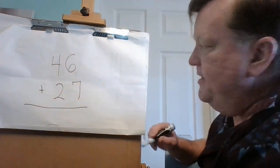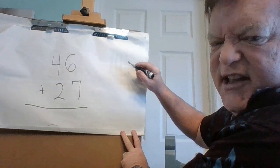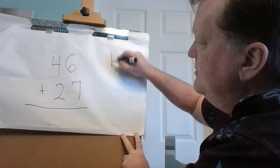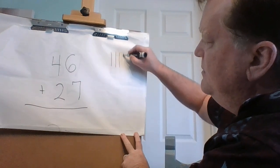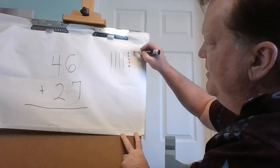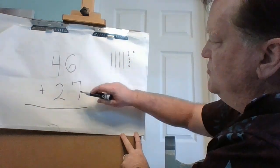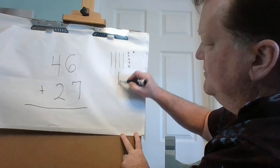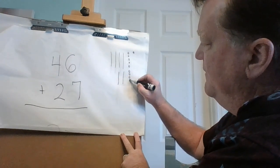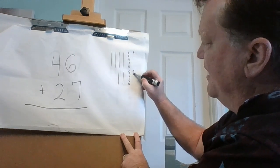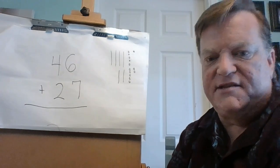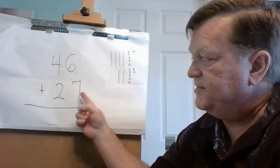While you're writing that down, I'm going to model it over here just like I did with the base ten blocks. We've got 46 — that's four tens and six ones: one, two, three, four, five, six. And then 27 is two tens and seven ones: one, two, three, four, five, six, seven. Go ahead and pause the video now while you write down 46 plus 27.